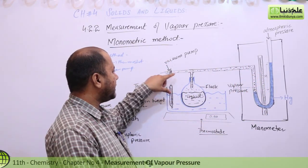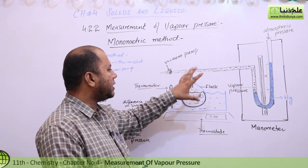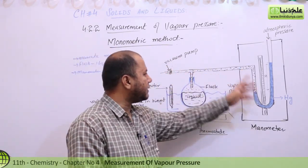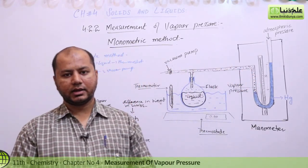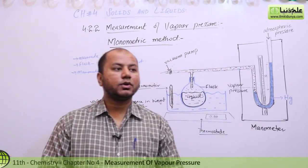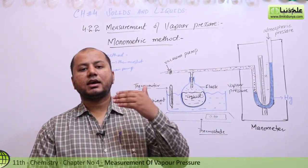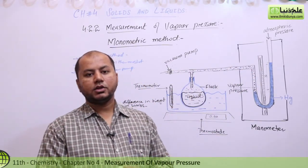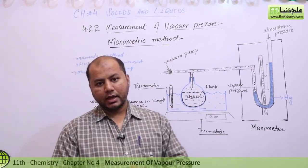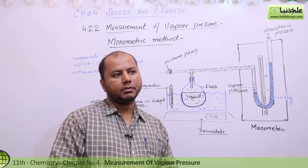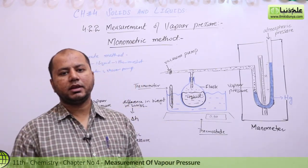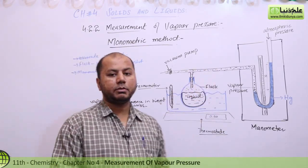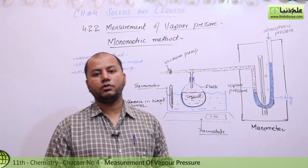First of all, a vacuum pump is attached here. What will happen is that all the air spaces inside this tube — all the air — will be removed by the vacuum pump. This is because we want to measure only the vapor pressure of the liquid molecules. Air contains oxygen, nitrogen, and many other molecules, so if those molecules are involved, the vapor pressure value will not be exact.